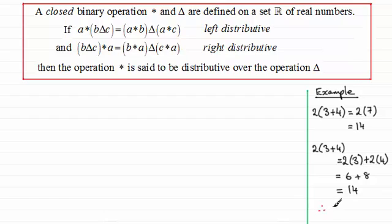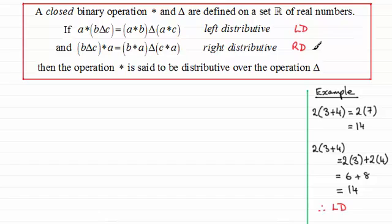That gives us 6 plus 8, which comes to 14. So this is left distributive — I'll put LD for left distributive. You could also put the 2 on the other side of the bracket and prove that it also comes to 14, which proves right distributive. Because both of these are true, we say that the operation of multiplication is distributive over addition.